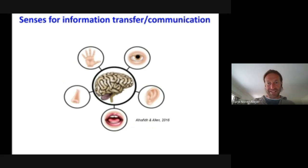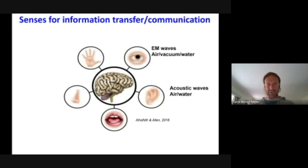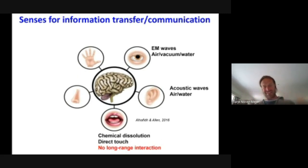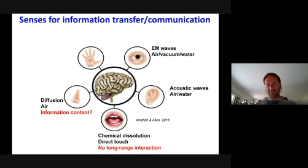Let me start with a basic graph on what we gather as human beings. Here are the different senses, which we can subdivide into a few physical categories: electromagnetic waves such as light traveling through air, vacuum, and water; acoustic waves in air and water; taste, which is a kind of chemical dissolution and direct touch — but these are not long-range interactions, so they're not useful for communicating information over large distances. Diffusion — chemical diffusion in air, like smell — also propagates information but not to large distances.